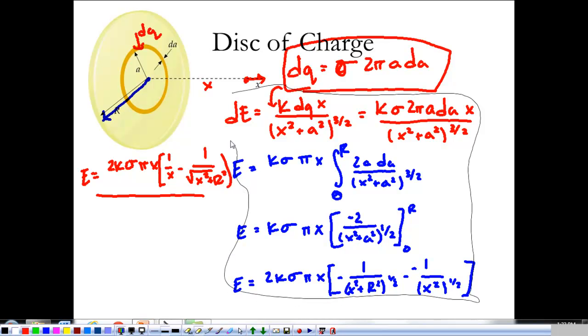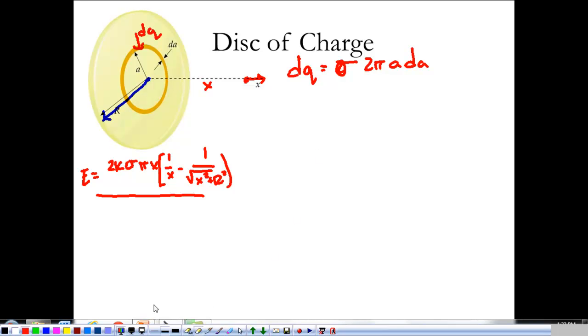We get rid of all of our work for the differential electric field. So, looking at what we have for potential, we know that dV is equal to K·DQ over our radius, which is √(X² + A²), just the substitution of Q for DQ.